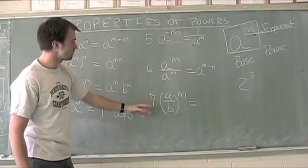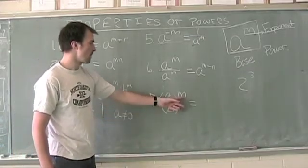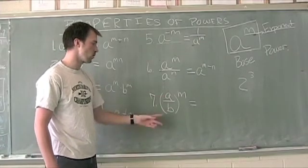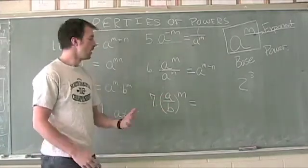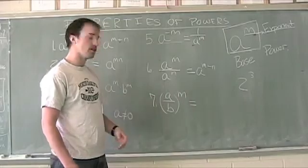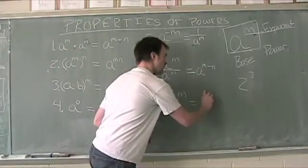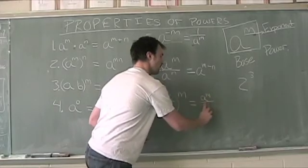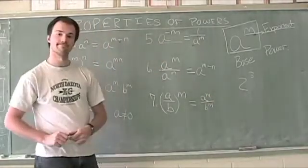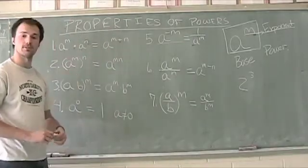Seventh property here is the power of a quotient. So here we have a quotient, a divided by b, and it's all raised to the m power, and this simply becomes a to the m divided by b to the m. So those are our properties of powers.